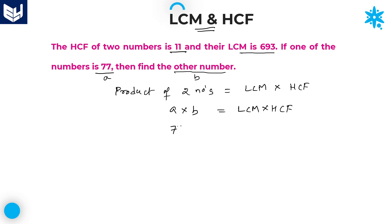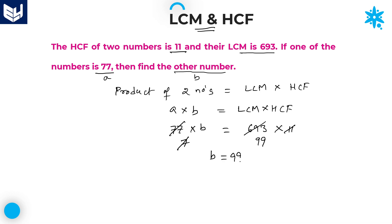First number is 77 and the second number we need to calculate. LCM of two numbers is 693 and HCF is 11. After cancellation — 77 cancels, 7 nines are 63 — therefore B is equal to 99. The second number is 99.